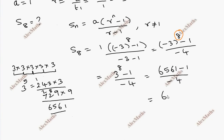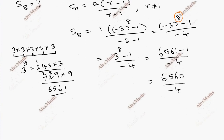Dividing 6560 by minus 4 gives minus 1640. So S8 equals minus 1640.